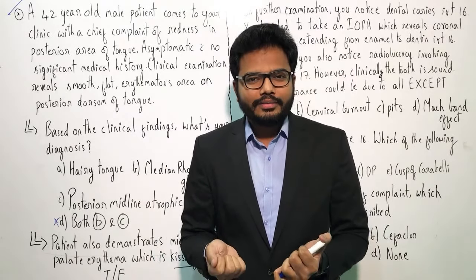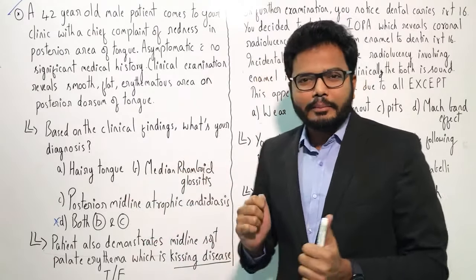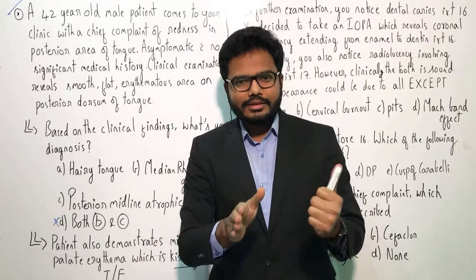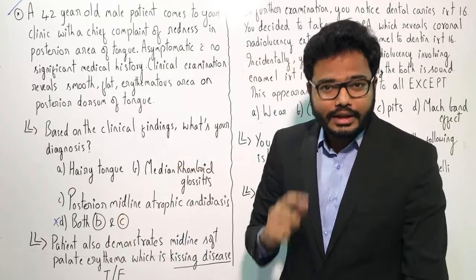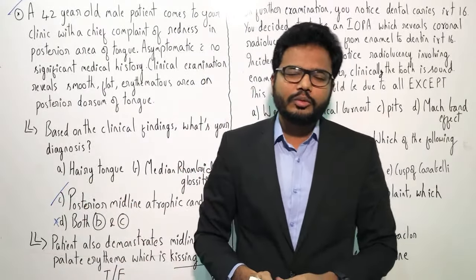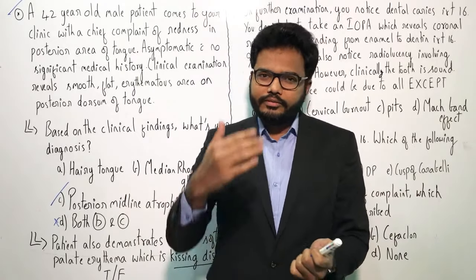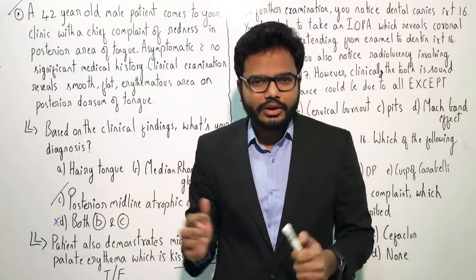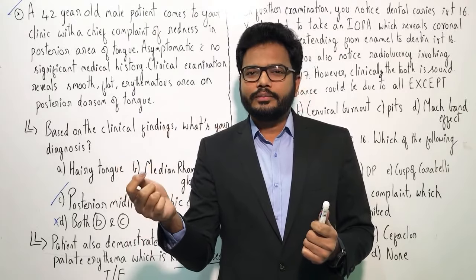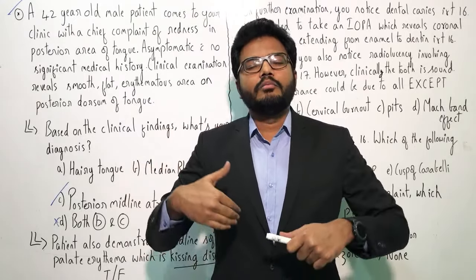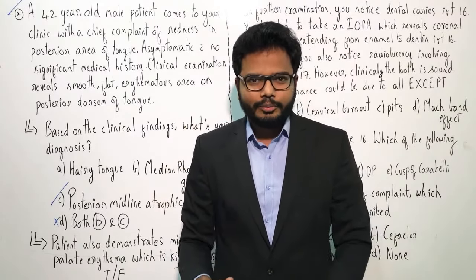The more appropriate diagnostic term, as per Shafer's and per several articles available in PubMed, is Posterior midline atrophic candidiasis. Previously it was called median rhomboid glossitis, but now the most appropriate term would be posterior midline atrophic candidiasis. Previously it was thought to be a developmental defect — related to lingual swellings, tuberculum impar, hypobranchial eminence, derived from first, second, third and fourth branchial arches — because of incomplete fusion in the posterior dorsal point leaving a rhomboid-shaped defect. But recent studies show it's more a form of candidiasis, so option C is the most appropriate.